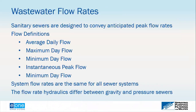Sanitary sewers are designed to convey wastewater, and you want to design a system to convey the anticipated peak flow rates, ensuring pipelines, lift stations, and treatment plants are sized for the most wastewater produced instantaneously. Key flow definitions include average daily flow — the average flow within the service area, generally presented as a per-resident breakdown. More critical are the maximum day flow, minimum day flow, and instantaneous peak flow, also called peak hydraulic flow or peak hourly flow. Pipe sizing must ensure all flow can be conveyed regardless of whether it is a gravity or pressure sewer system.